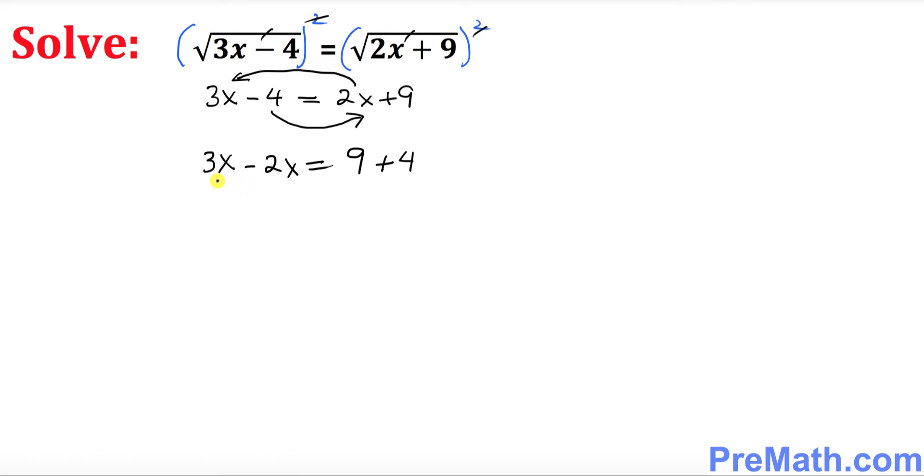Piece of cake, isn't it? So 3x minus 2x is going to give you x equals to 13. That is our solution.